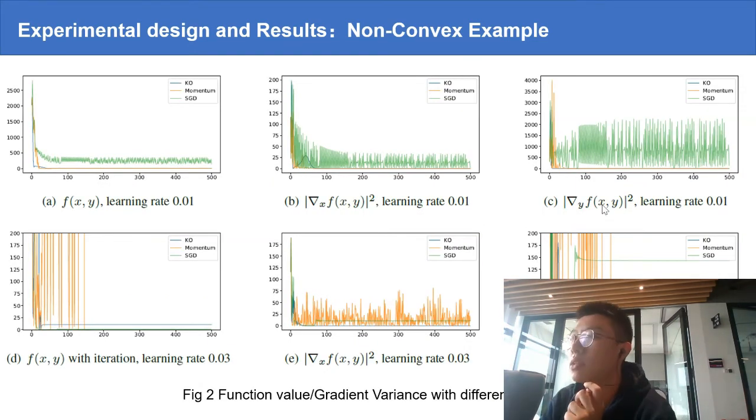We also visualize the function value and gradient variance with three different methods. For the situation with small step size, the Kalman Optimizer achieves zero gradient variance, but SGD introduces large variance and has difficulties in convergence.